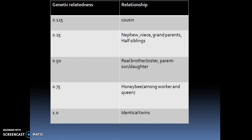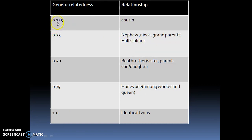This table shows the relationship and the genetic relatedness values — the R values you will use in numerical problems. For cousins, R equals 0.125. For nephews, nieces, grandparents, or half-siblings, R equals 0.25. For full brothers, sisters, parents, or offspring (parent–child), R equals 0.50.